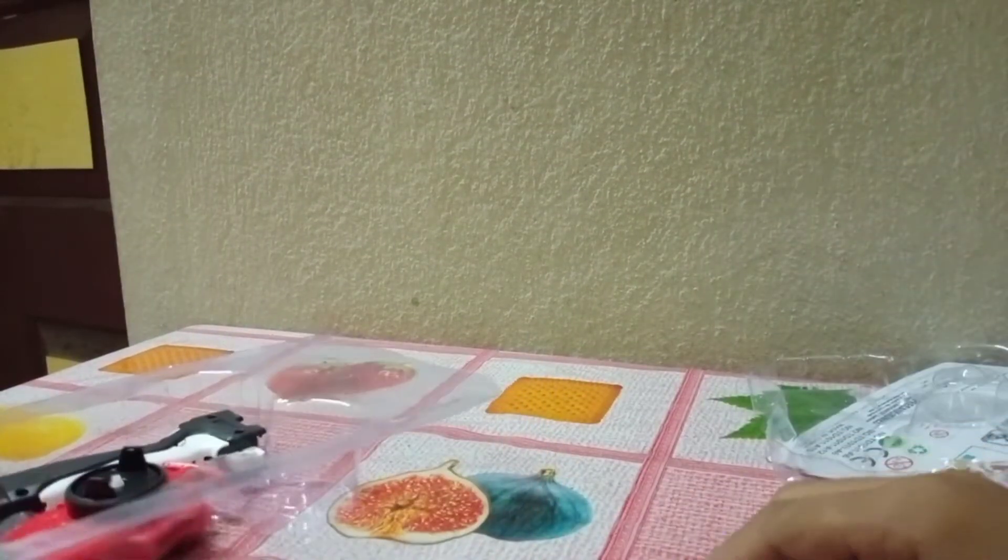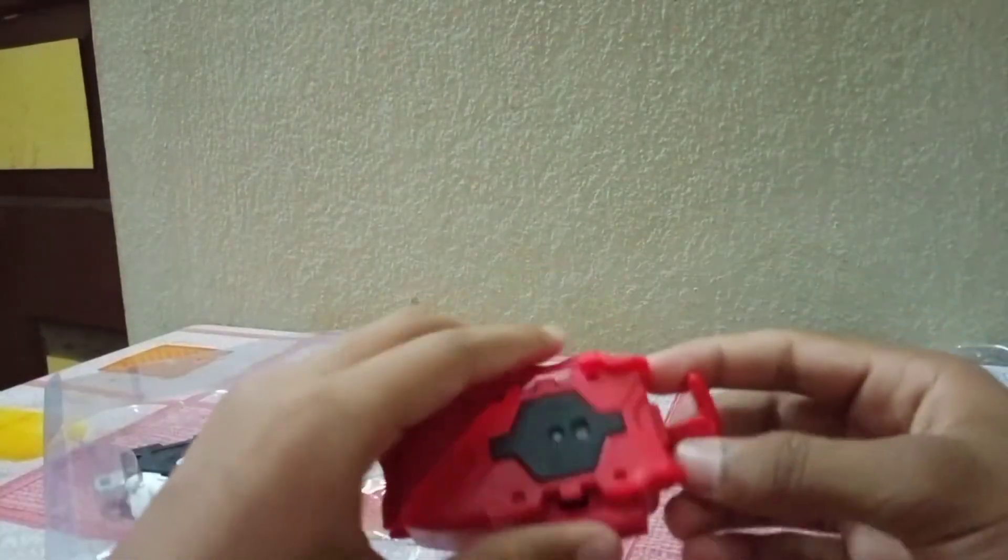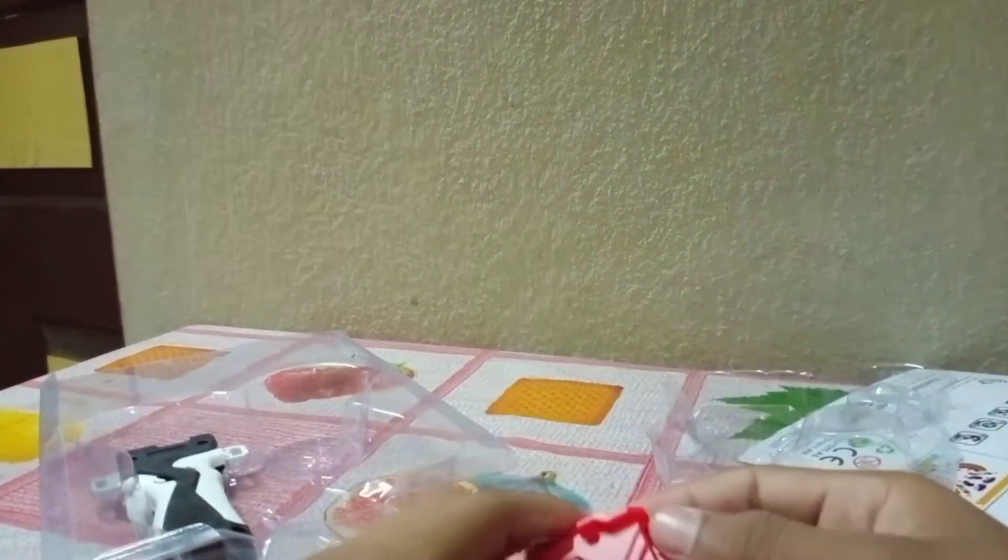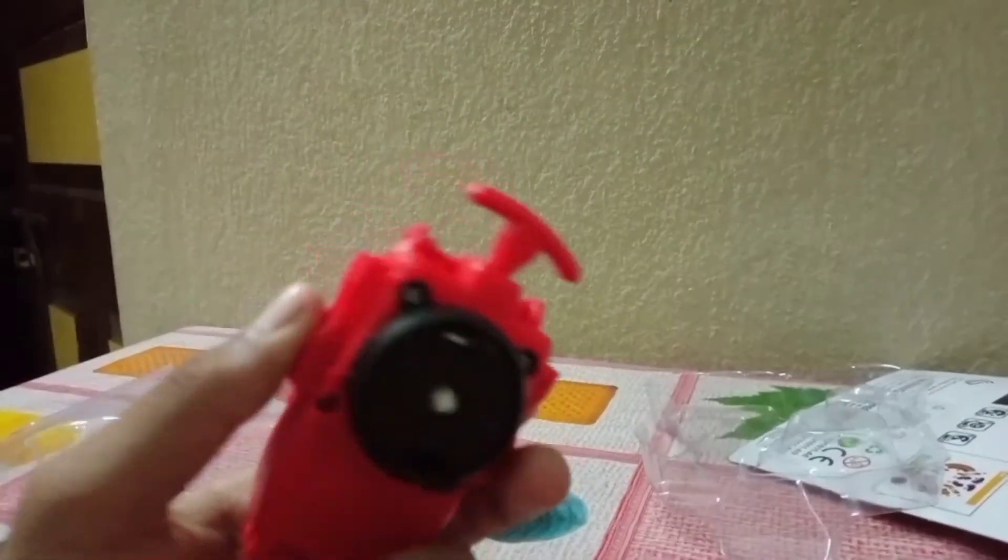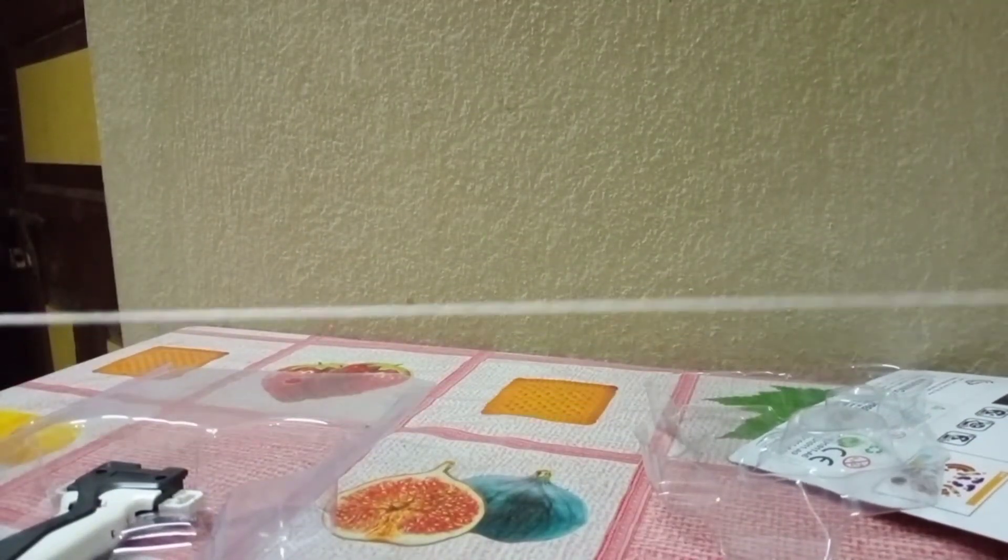So let's unbox the launcher which is a string launcher. Let's check out its length. Oh, it's not coming on the screen.